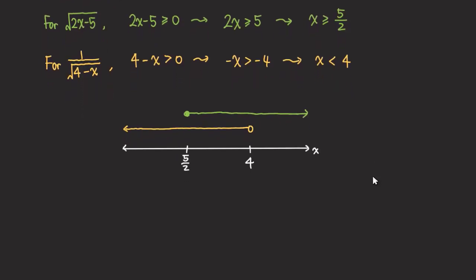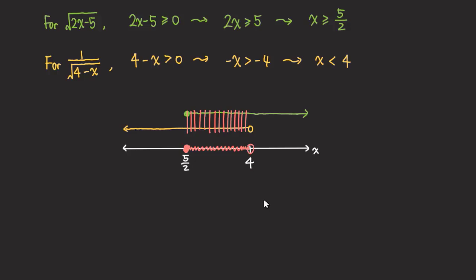Coming back to the number line, we can see where they overlap — it's the region between 5/2 and 4. The open circle at 4 means 4 cannot be included, because if you substitute x = 4, you get 4 minus 4 = 0, and you'd be dividing by 0. So we do not include 4. We shade from 5/2 all the way to just below 4. I suggest graphing all the way to the ends of the number line so you can clearly see the overlapping region.